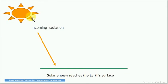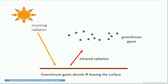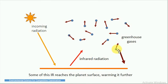The sun radiates solar energy; this incoming solar radiation reaches the earth's surface. The earth's surface warms and emits radiation. The greenhouse gases absorb the infrared radiation leaving the earth's surface. When the greenhouse gases absorb this infrared radiation, the gases are energized and then emit radiation in all directions, warming the earth's surface and atmosphere. Some of this infrared radiation reaches the earth's surface and warms it further.